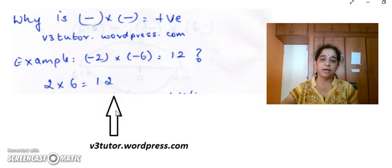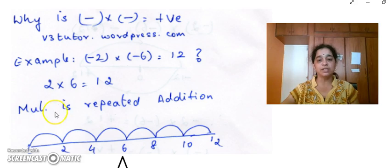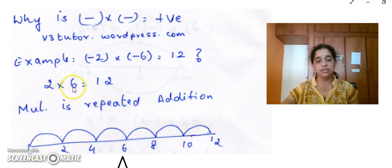What is actually happening here? We are adding 2 six times. All of us know that multiplication is repeated addition. So we are adding 2 six times, which means when we do this, we get 12. In other words, you can say that you are adding 6 two times. Then also you will get 12.